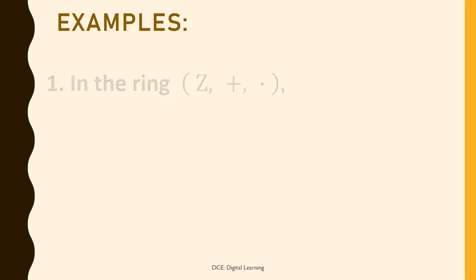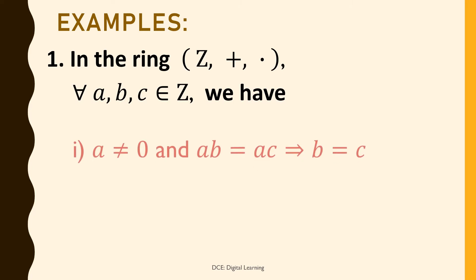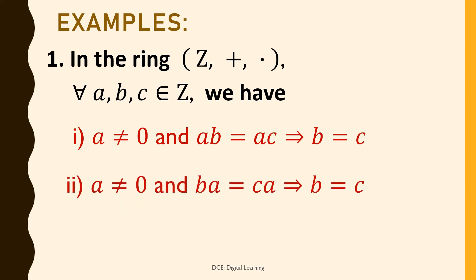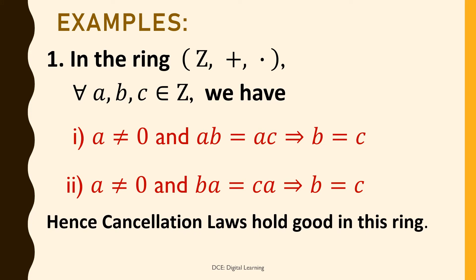Example 1: In the ring (Z, +, ·), the ring of integers with usual addition and multiplication, for all a, b, c belonging to Z, we have: a ≠ 0 and ab = ac implies b = c, and a ≠ 0 and ba = ca implies b = c. Hence cancellation laws hold good in this ring.